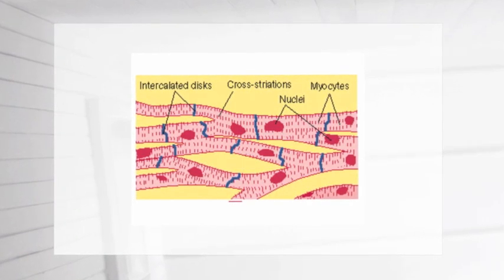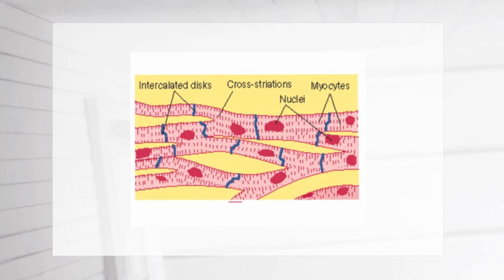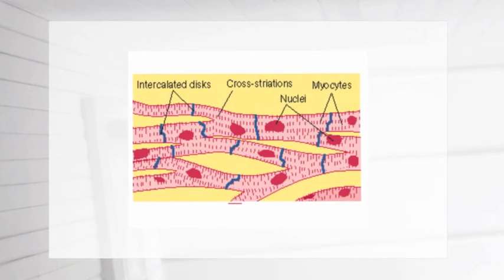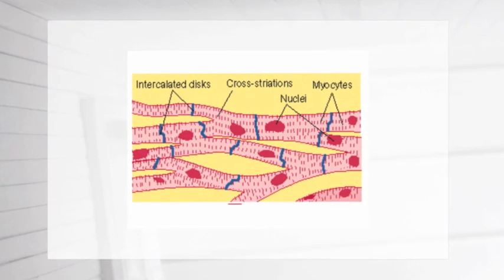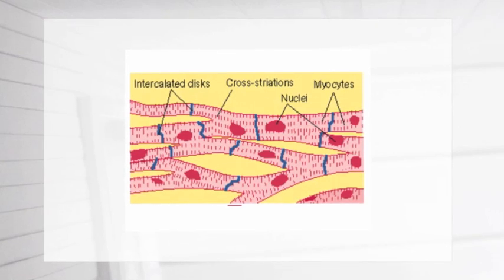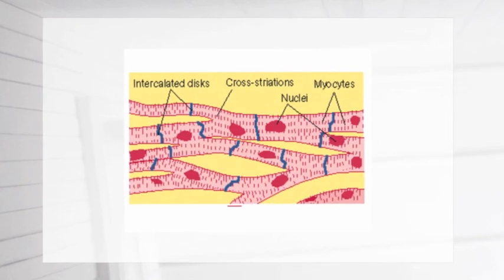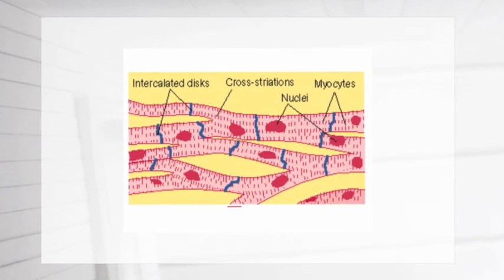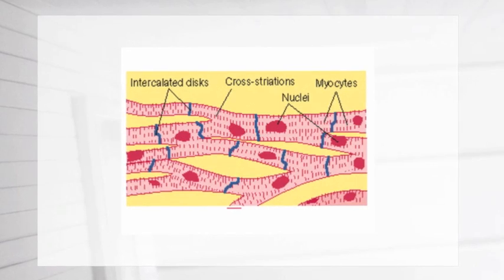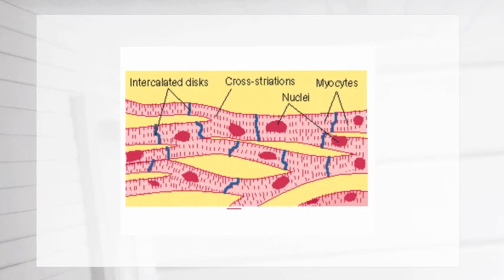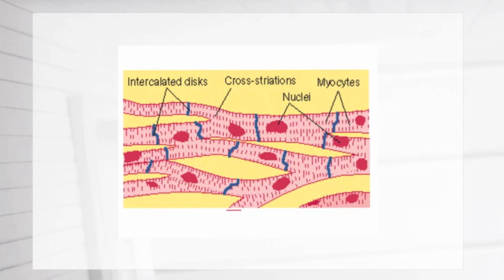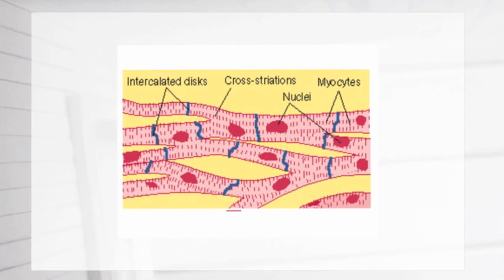One of the main parts of the cell are the intercalated discs. These discs help hold the cell next to them together using desmosomes that act like adhesion and help send quick actions to each chamber, allowing them to contract together. Gap junctions, which are inside of the intercalated discs, are the passageways for the actions to pass through.